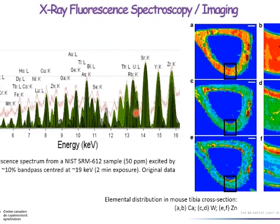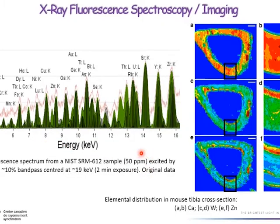This gives an impression of what fluorescence looks like. On the left is a fluorescence spectrum collected from standard samples. Each peak corresponds to one element, and we can measure tens of elements simultaneously. If we focus the beam down to a very small spot — on the order of microns — and collect spectra at each pixel while scanning the sample, we get elemental distribution maps showing how different elements are distributed within the sample.